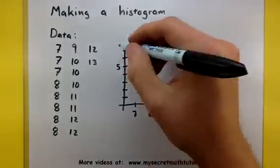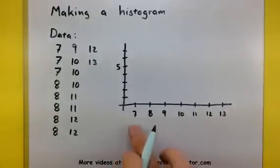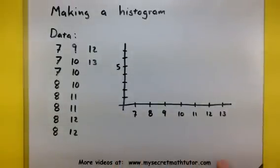There we go. So again, this represents frequency, and this represents the values of our variables. Okay? So let's start off.